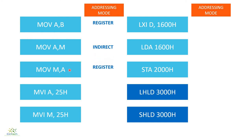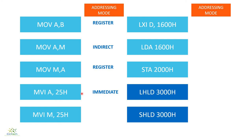Next is MOV M, A. The data is present in A, the accumulator — that is a register — so it is register mode of addressing. Next instruction is MVI A, 25H. You can see that the data is already given in the instruction itself, so this is immediate mode of addressing. A useful trick: whenever you come across an 'I' in the instruction mnemonic, that instruction happens to be in immediate mode of addressing.